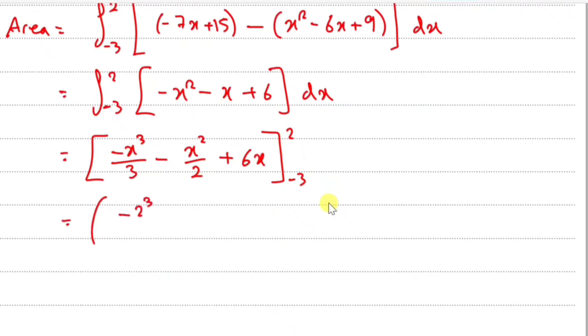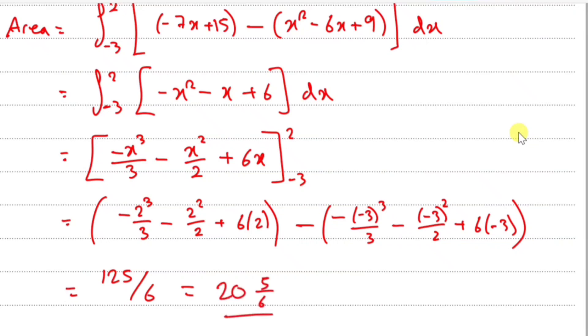Minus - then replace x with -3. So minus [(-3)³/3 - (-3)²/2 + 6(-3)]. Put this all in your calculator, you should get 125/6, which is also 20 and 5/6. That's it.